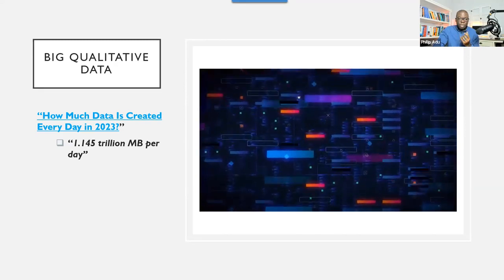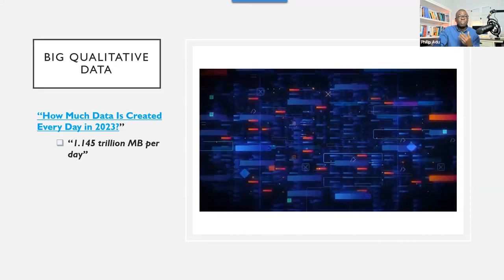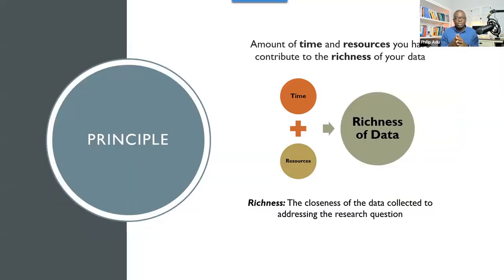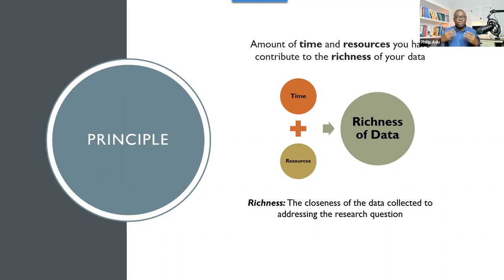And I think it's going to be more than this because of artificial intelligence — we and AI are all producing data. So as we are producing data, we as researchers have to think about how can we access those data, analyze them, and use them to understand the phenomenon that we are focusing on. So that is the issue of big data. It's so big that sometimes it's humanly impossible for us to analyze. So what we can do is think about collecting data that is rich for you to use to address your research question. Two main factors affecting the richness of information: time and resources.